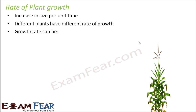Growth rate can be of two categories: arithmetic growth rate and geometric growth rate. Some plant parts show arithmetic growth rate whereas some other plant parts show geometric growth rate. Geometric growth rate is more common and seen in most aspects of plant growth. We will discuss arithmetic growth first, then geometric growth.